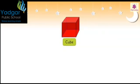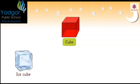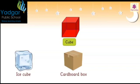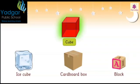This is a cube. An ice cube, a cardboard box, and a block are all examples of a cube.